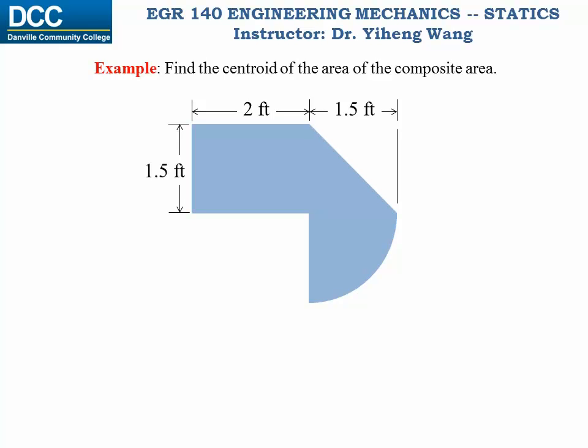Now let's look at this example. Find the centroid of this composite area. From observation, we can tell it is a combination of a rectangle, an isosceles right triangle, and a quarter of a circular area.